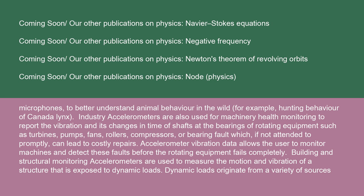Accelerometers are also used for machinery health monitoring to report the vibration and its changes over time of shafts at the bearings of rotating equipment, such as turbines, pumps, fans, rollers, compressors, or bearing faults which, if not attended to promptly, can lead to costly repairs. Accelerometer vibration data allows the user to monitor machines and detect these faults before the rotating equipment fails completely.